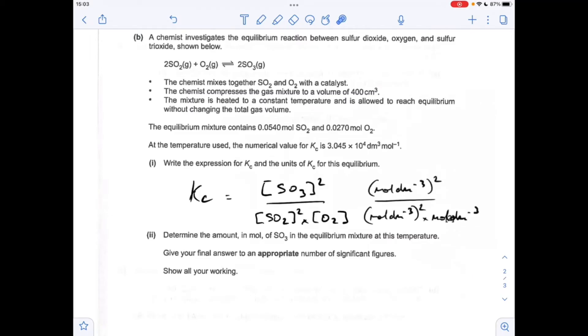For the units, I've just put the units of everything into the expression. You can see that these moles per decimeter cubed squared terms are going to cancel, so we're left with one over moles per decimeter cubed. We'll just take that up to the top and flip the signs. So it will be dm³ mol⁻¹.